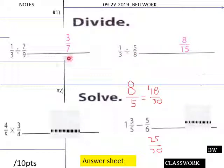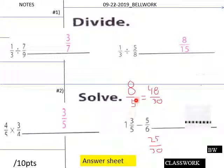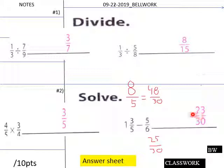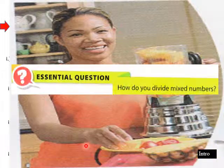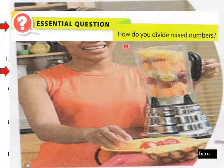Three over seven for number one — invert and multiply. Eight over five times nine over seven. Then multiply straight across. For the subtraction, make both fractions over 30: 48 over 30 minus 25 over 30 equals 23 over 30. Now into our lesson — how do you divide mixed numbers? That's our essential question.